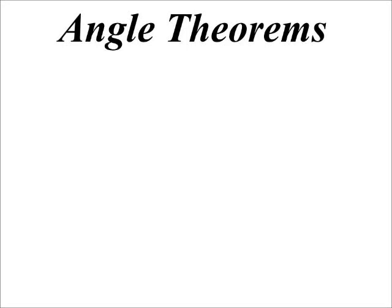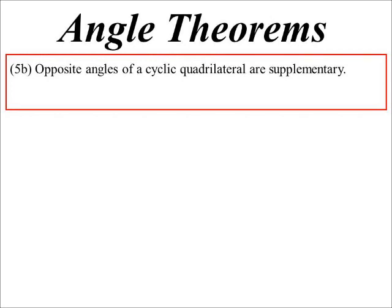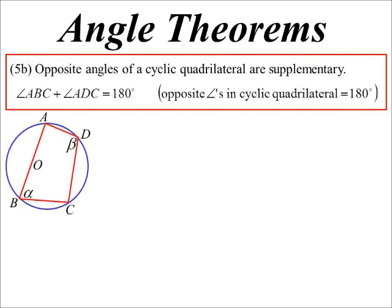Continuing with different angle theorems about the circle, the next one is to do with cyclic quadrilaterals. The opposite angles in a cyclic quadrilateral are always supplementary, so add up to 180 degrees.